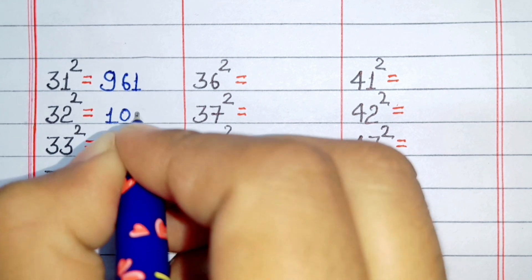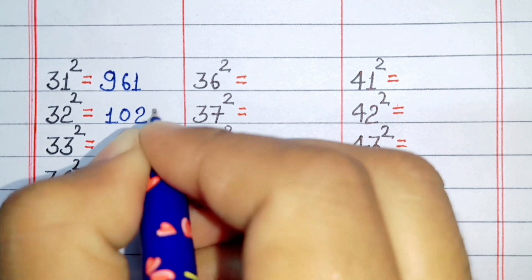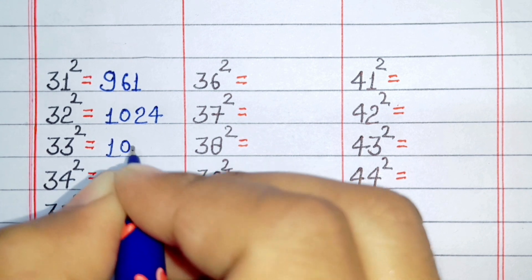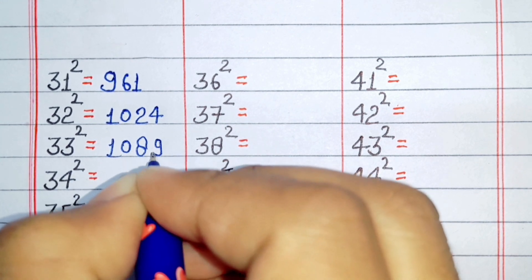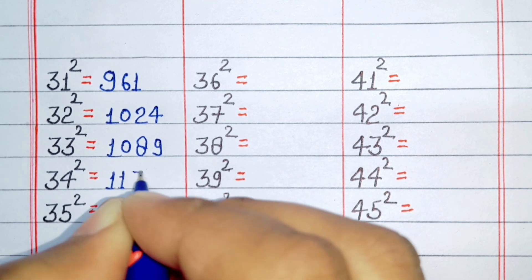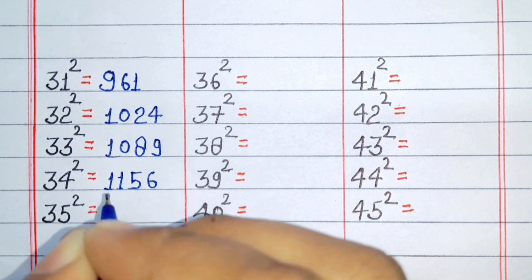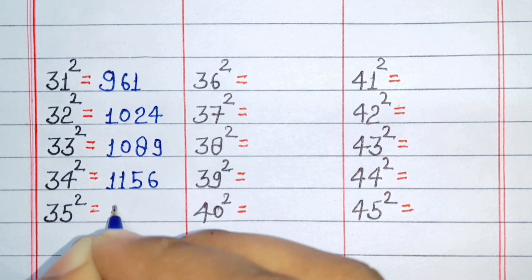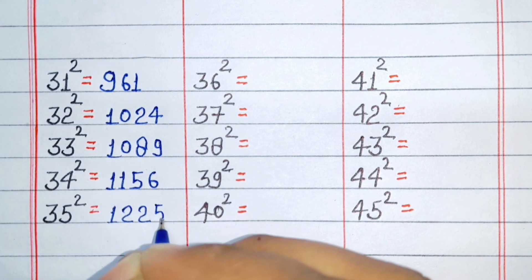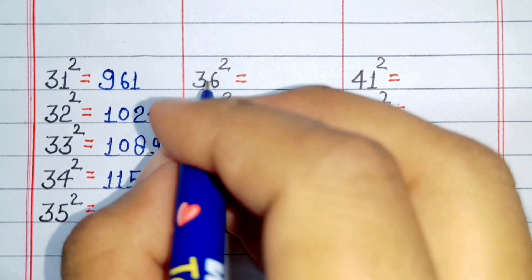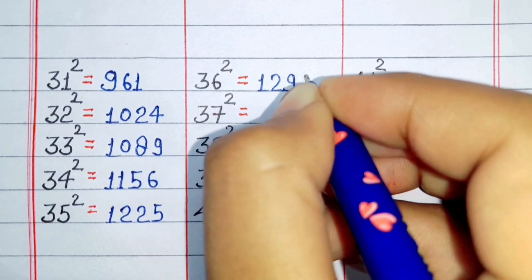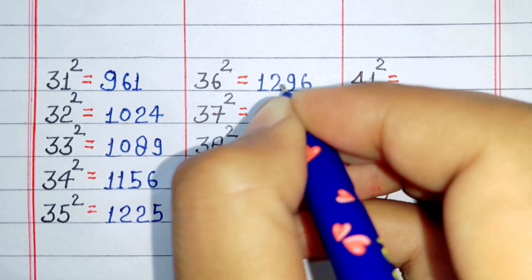Square of 32 is 1024. Square of 33 is 1089. Square of 34 is 1156. Square of 35 is 1296.